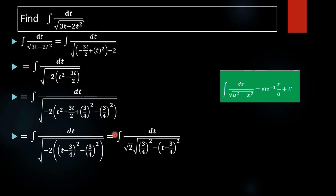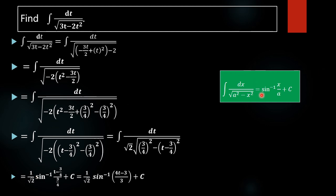Taking the negative inside gives 3 by 4 whole squared minus t minus 3 by 4 whole squared. The factor of 2 is outside, so root 2 comes outside the integral. Applying the formula gives 1 by root 2 into sine inverse of x by a, where x is t minus 3 by 4 and a is 3 by 4. Simplifying, the 4s cancel, giving the final answer: 1 by root 2 into sine inverse of 4t minus 3 divided by 3, plus c.